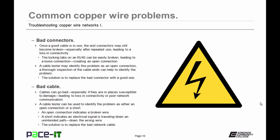The locking tab can be easily broken, leading to a loose connection, or creating an open connection. A cable tester may identify this problem as an open connection, but a thorough inspection of the cable ends can help to identify the problem. The solution is to replace the bad connector with a good one with your crimper.